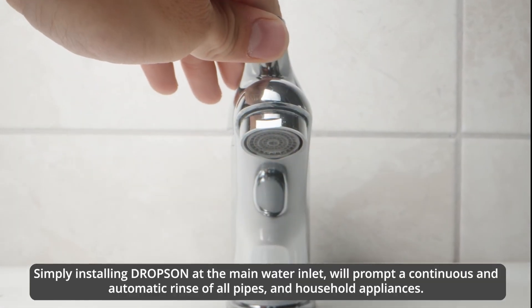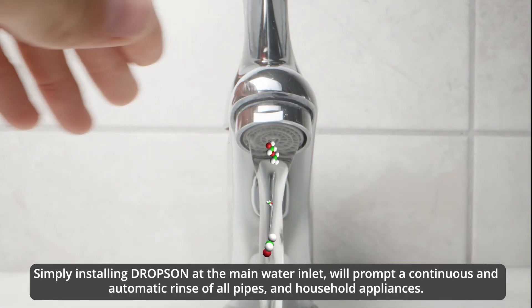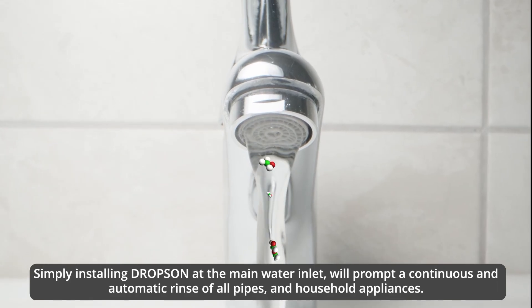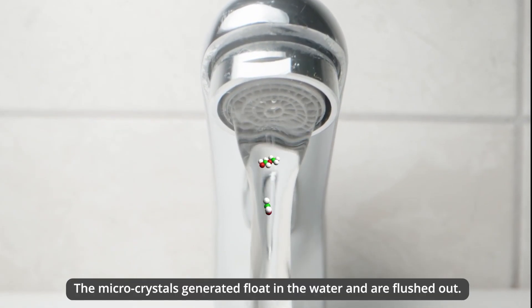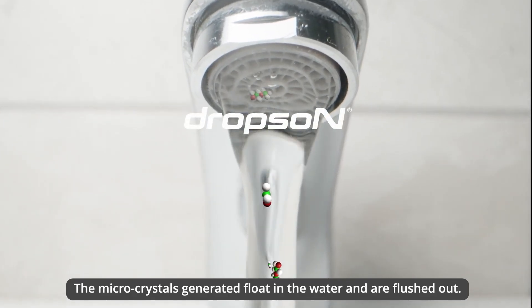Simply installing Dropson at the main water inlet prompts a continuous and automatic rinse of all pipes and household appliances. The microcrystals generated float in the water and are flushed out.